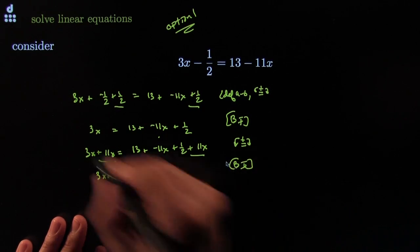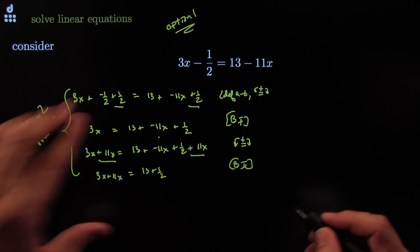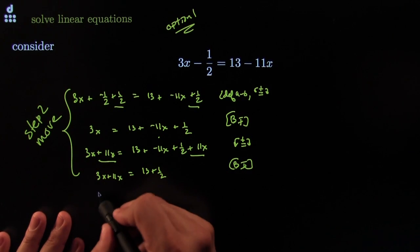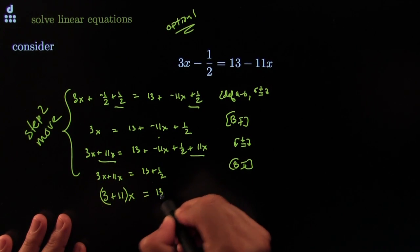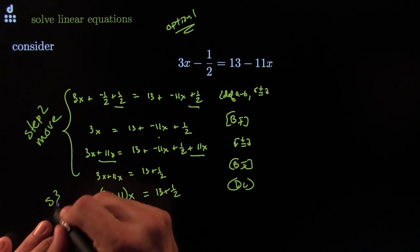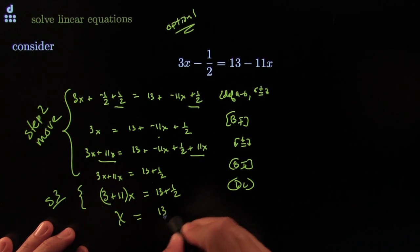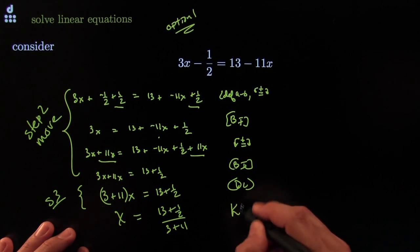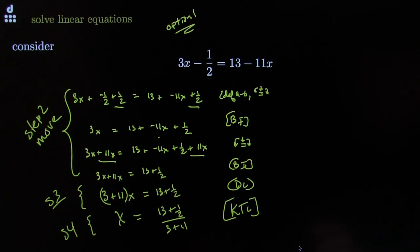That gives me 3x plus 11x equals 13 plus one-half — that's step 2 complete. I've moved all the x's to one side and all the x-less items to the other. Step 3: gather the x's by distributive law. Step 4: kill the coefficient. So x equals (13 plus one-half) all over (3 plus 11). That's kill the coefficient — you're done.